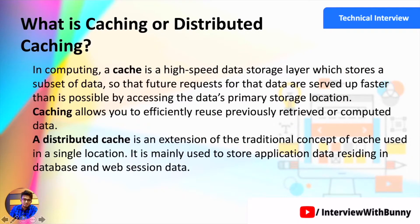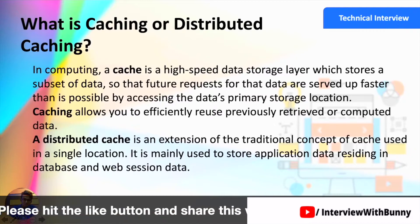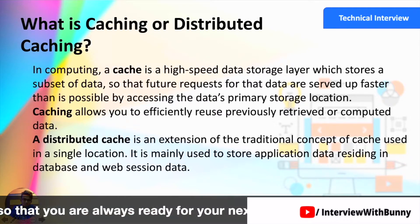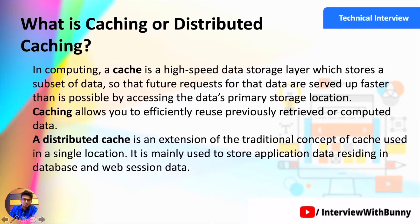Theoretically, in computing, a cache is a high-speed storage device which stores a subset of data that helps enhance the response time of the system. Caching helps you efficiently reuse previously computed data in memory to enhance the speed of the system. A distributed cache is simply multiple caching systems deployed strategically to enhance the response time of the application.